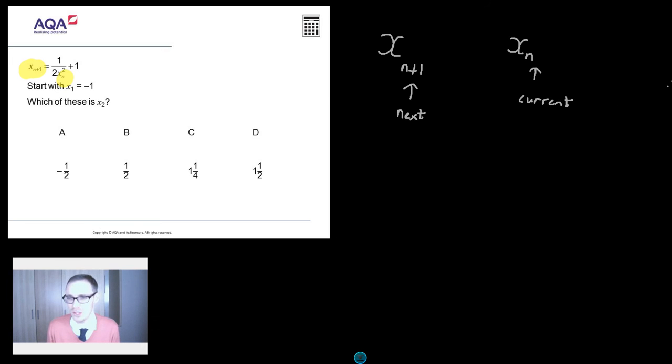So let's take a little look at this question in a bit more detail now. So it's going to say to me, X n plus 1. We now know that that just means the next X value is equal to 1 over 2 lots of the current X value, X n. And it tells me that to start with, let's say that X is minus 1. So 1 over 2 lots of minus 1 squared plus 1. And that's it. We've transformed this dodgy iteration topic into a very nice algebraic substitution.